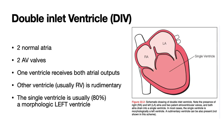This single ventricle is usually — about 80% of the time — a morphologic left ventricle. As you remember, the morphologic right ventricle has a heavily trabeculated interior, and one of the trabeculations is the moderator band. But here we've got a kind of smooth ventricle, which is the morphologic left ventricle most of the time.